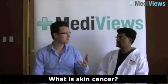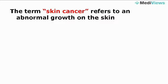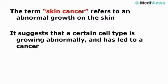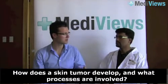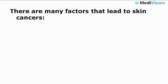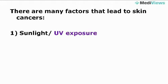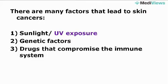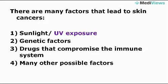I'd like to start by asking a broad question: what is skin cancer? When we use the term skin cancer, we're simply referring to an abnormal growth on the skin — a certain cell type in the skin that's growing abnormally. There are many factors that lead to skin cancers. One of the more well-known ones is the effect of sunlight, the ultraviolet rays, that lead to mutations in the skin and an abnormal growth. There are also genetic factors and drugs that compromise your immune system that contribute to forming skin cancer.